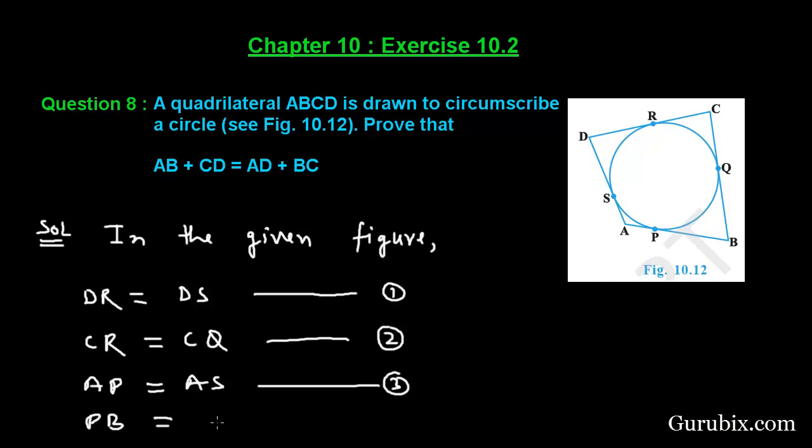AP equals AS. This is our equation number 3. PB equals BQ. This is our equation number 4.